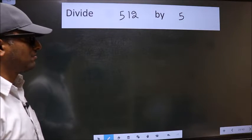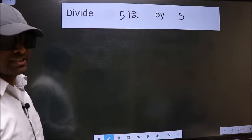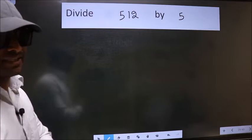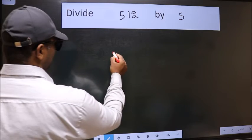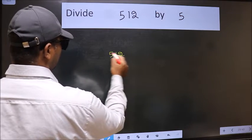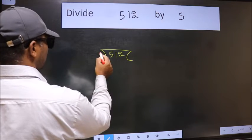Divide 512 by 5. To do this division, we should frame it in this way: 512 here and 5 here.